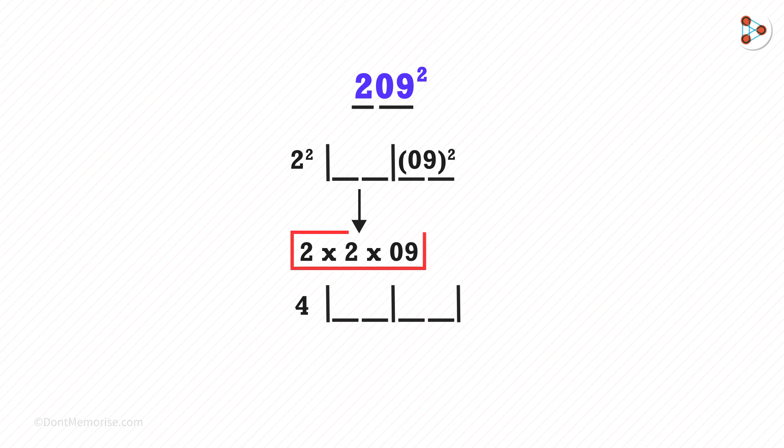2 squared is 4. The product of this will be 36 and 9 squared is 81.